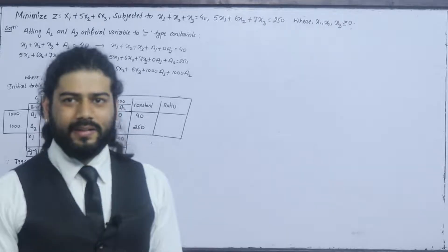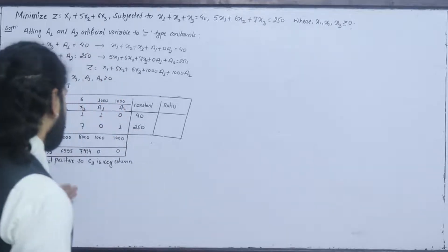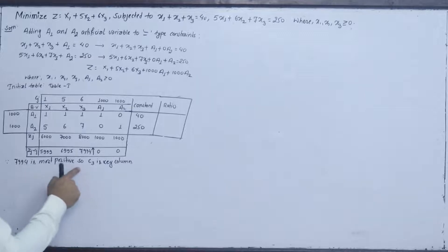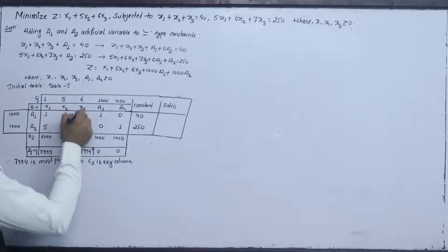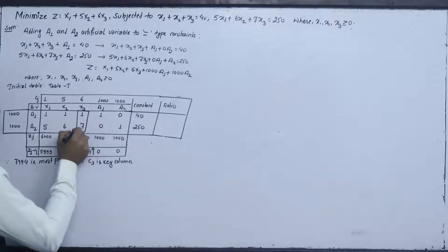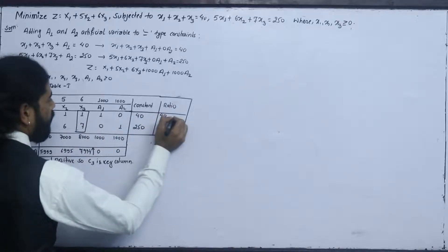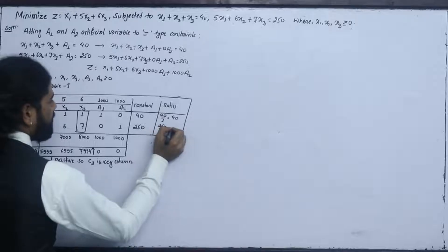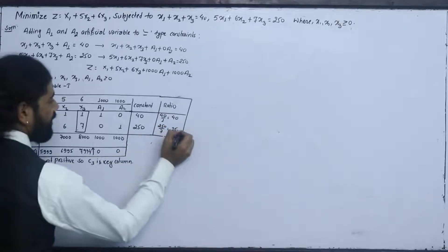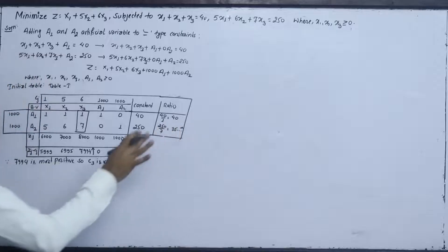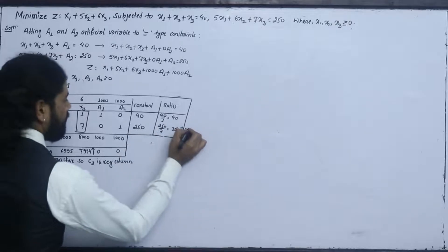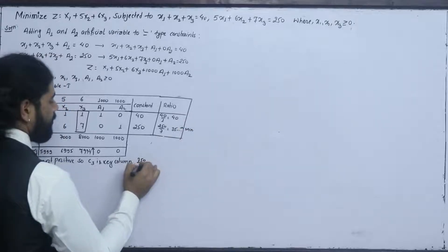0 is less than 0 — all values must be positive to start. 6994 is the most positive, so C3 is the key column. We divide the ratios: 40 divided by 1, and 250 divided by 7 equals approximately 35-point-something. 250 divided by 7 is the minimum ratio.